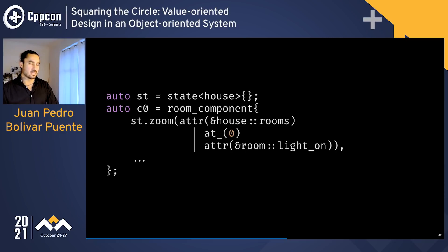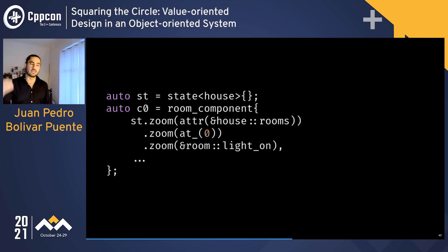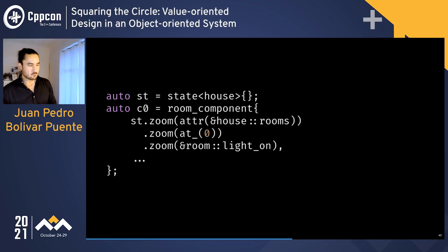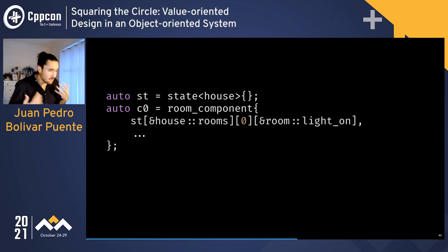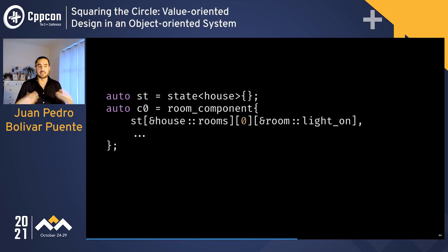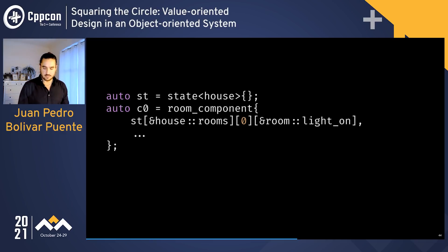This completely solves the modularity problem. Room components can be instantiated anywhere in the application — bound to a house or anything else — just by combining lenses and zooming into the right part of the state. Our library also supports a simpler syntax using square brackets on cursors: pass it an attribute or index and, if compatible with the current cursor type, it automatically applies the right zoom operation, giving us very clean, readable code.